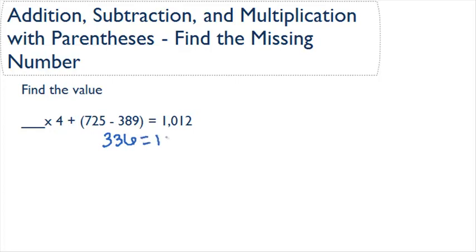If we bring down the rest of our equation, we get 1012 on this side and some number times 4 plus 336 on the other side.